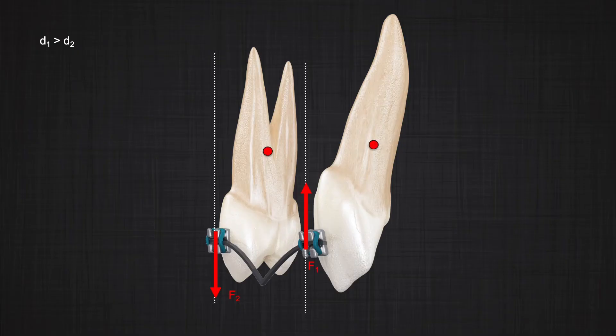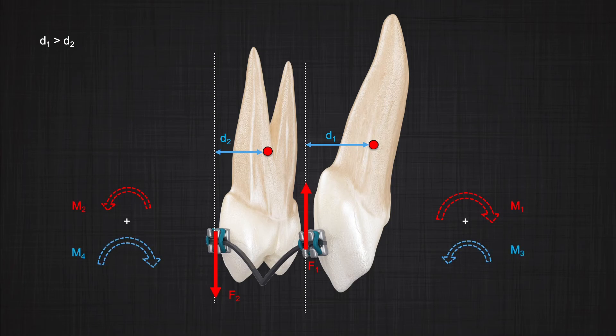But what happens if the line of action of the force is farther from the center of resistance in one tooth than the other? In another word, D1 and D2 are not equal. Under this condition, the moment that is applied on one tooth is larger than the moment on the adjacent tooth. On these conditions, you will see the moment that is larger will override the moment that is smaller and both teeth will receive a similar moment but small and move in the same direction.